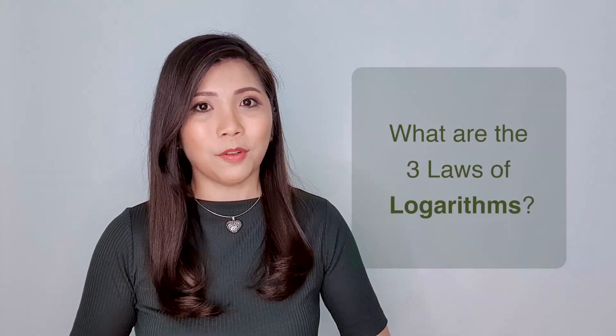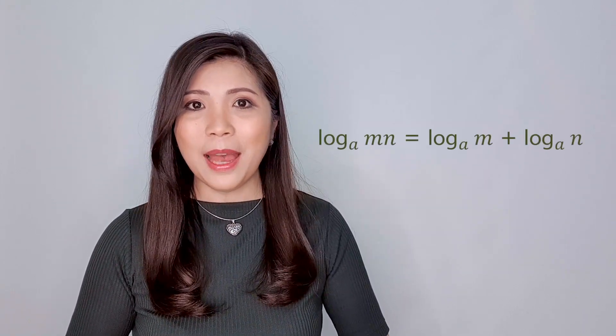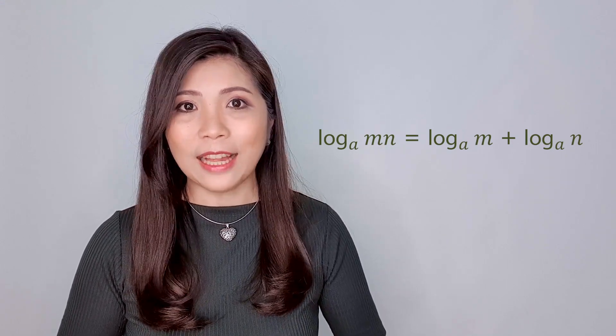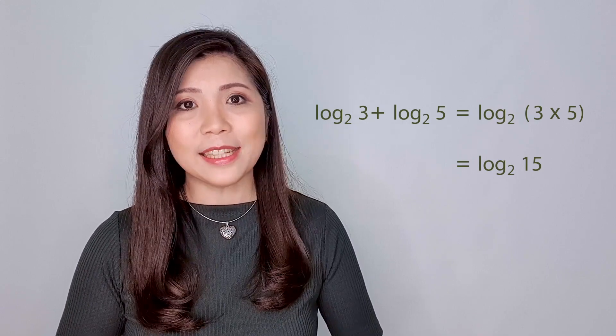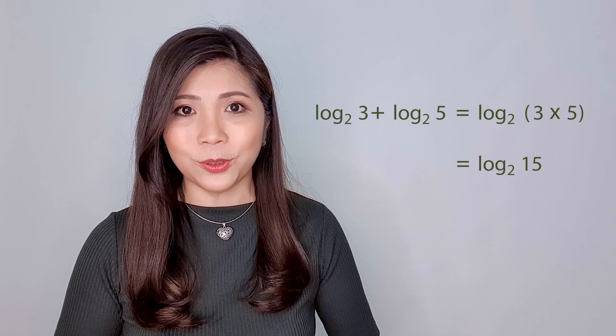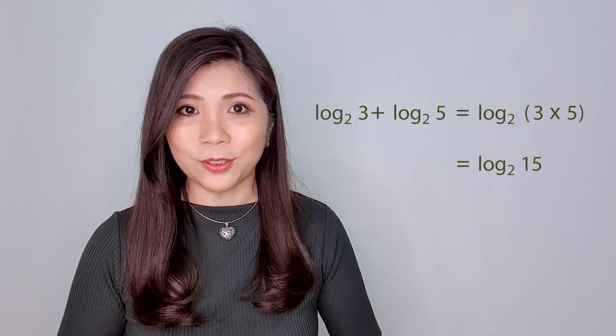What are the three laws of logarithms? Let's look at law number 1. Log mn to base a is equal to log m to base a plus log n to base a. For example, log 3 base 2 plus log 5 base 2 is equal to log 3 times 5 base 2, and the answer is log 15 to base 2.